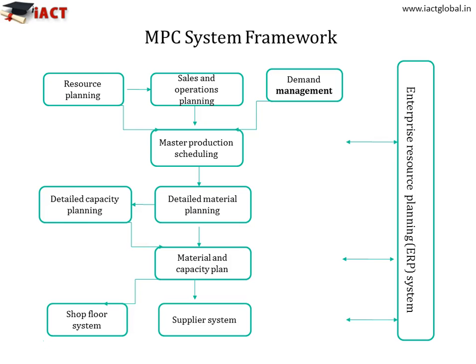Looking at slide 3, this figure is a schematic diagram of the general MPC system used within a firm for planning and controlling its manufacturing operations. The figure is divided into three phases. The front end is a set of activities and systems for overall direction setting, which establishes the overall company direction for manufacturing planning and control.